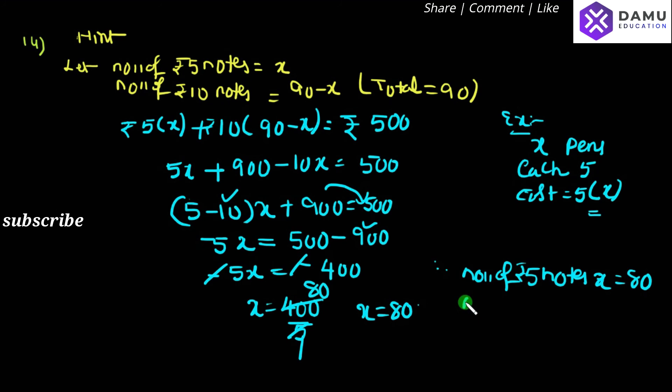Then the number of 10 rupee notes will be equal to 90 minus x, that's 90 minus 80, which will be equal to 10.